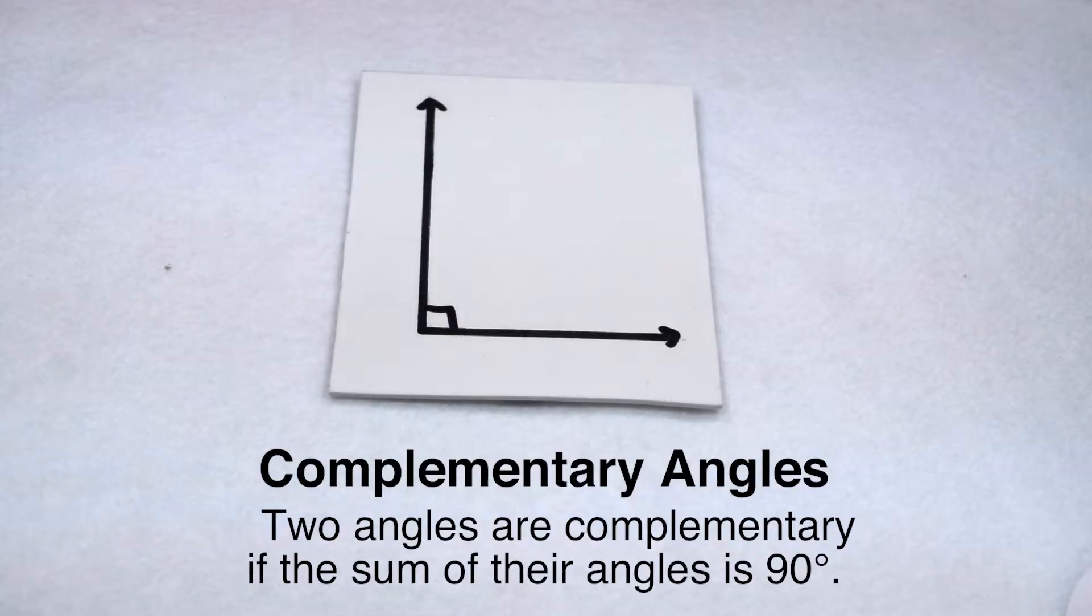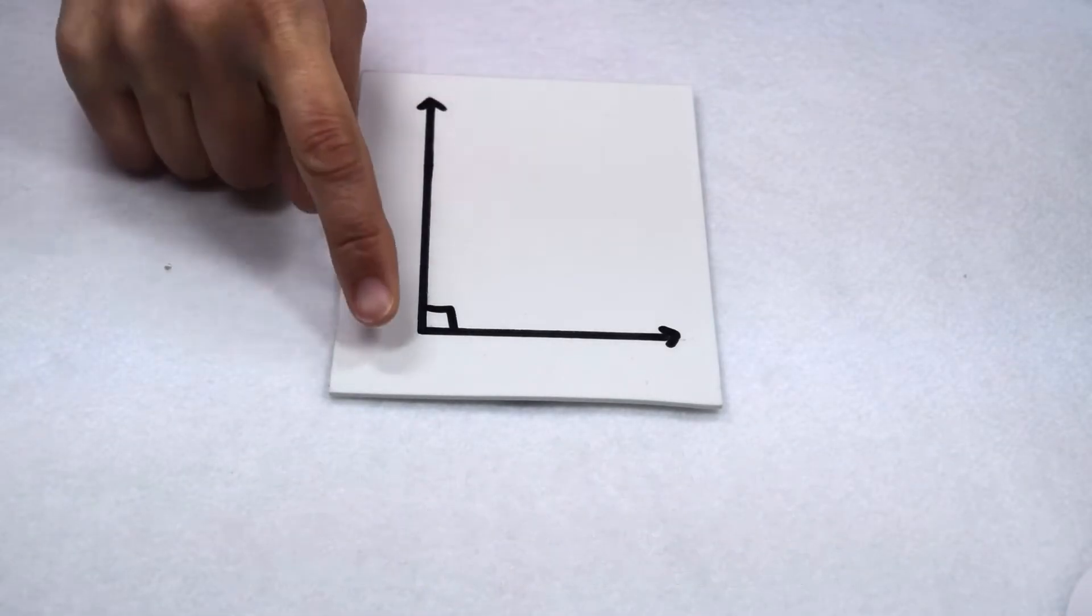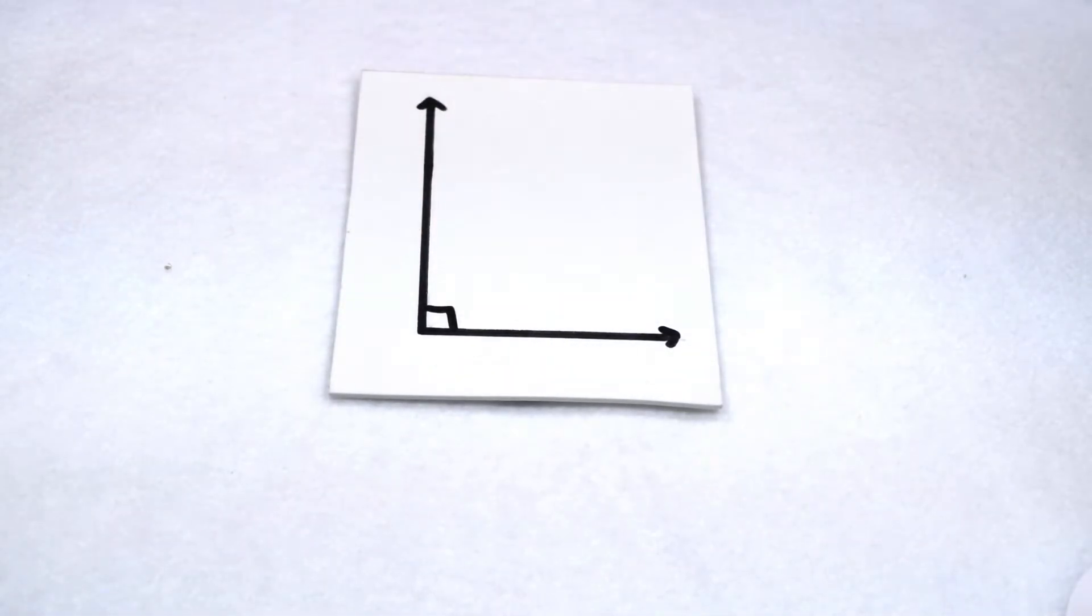Two angles are complementary if the sum of their angles is 90 degrees. Let's start with 90 degree angles. Remember, 90 degree angles are also called right angles.